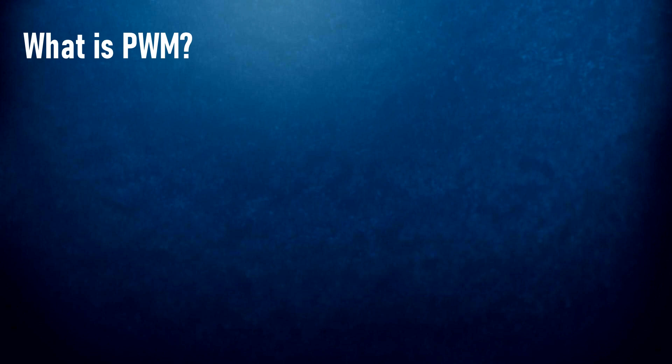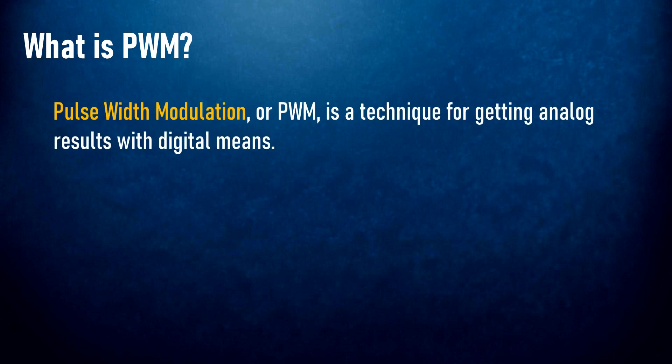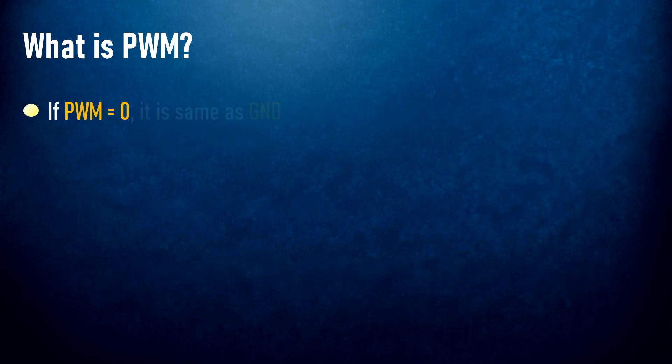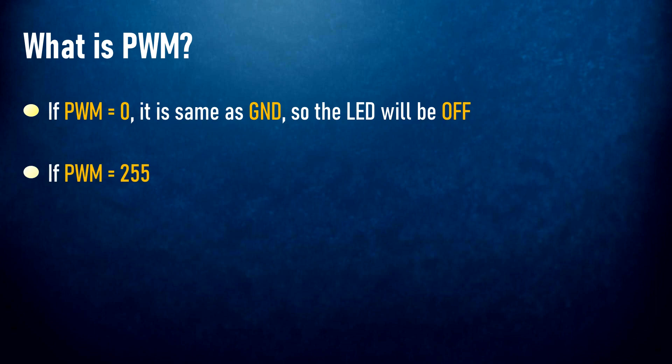What is PWM? Pulse width modulation or PWM is a technique for generating analog results with digital means. PWM varies between 0 to 255. The bigger the value of PWM, the brighter the LED is and vice versa. If PWM equals 0, it's same as ground, so the LED will be off. If PWM equals 255, it's same as VCC, so the LED will be fully on.